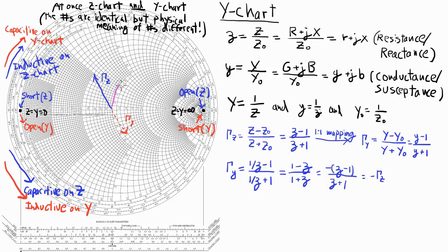Now this circle is a constant r circle on the z chart and a constant g circle on the y chart. So it's either an r equals one or a g equals one circle.